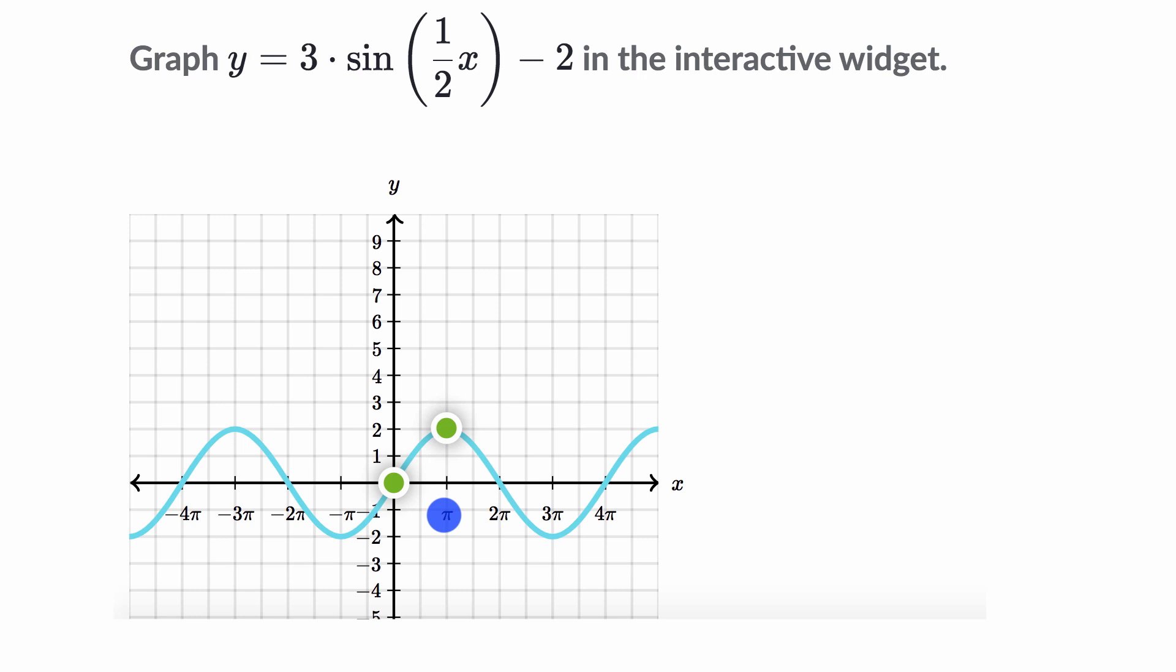And it first bears mentioning how this widget works. So this point right over here helps you define the midline, the thing that you could imagine your sine or cosine function oscillates around.